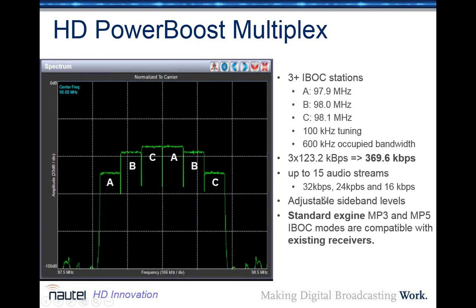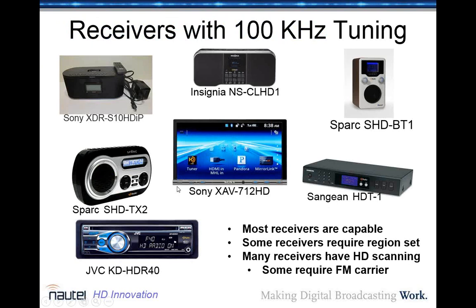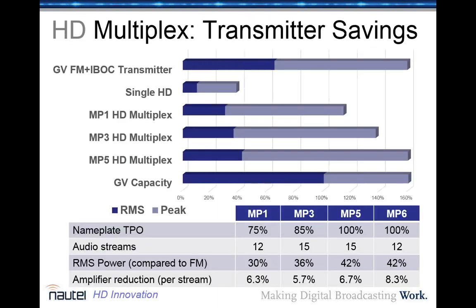We can also switch MP3 into all-digital MP5 mode, which now has a real purpose here. With MP5, when a receiver tunes into a station, it first mutes the FM — which is no longer present — and plays the audio once available, rather than blending from FM to digital as in MP3 mode. Most receivers are capable of tuning into these signals. Some require a backdoor setting to switch into a European mode, but all receivers can tune into at least two of those stations. Many receivers also have HD scan capability, though some require an FM carrier to be detected.